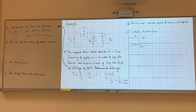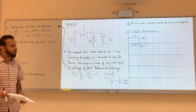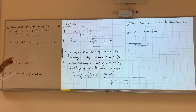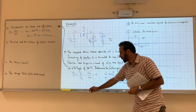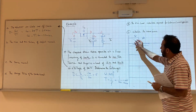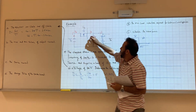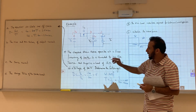The maximum and minimum values of the output current — those are the two key points for the current waveform. I_out is the output current. When the switch is on and closed, the inductor current increases. When it's off, it decreases. That's how it works in a buck converter.